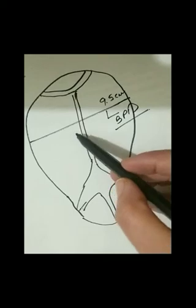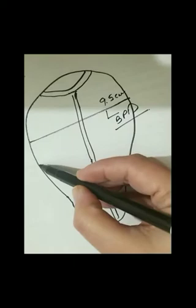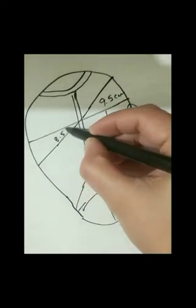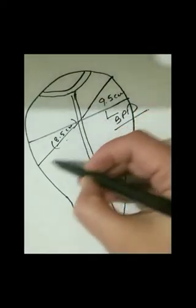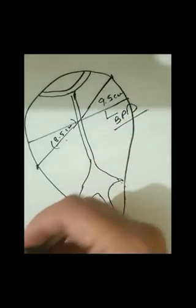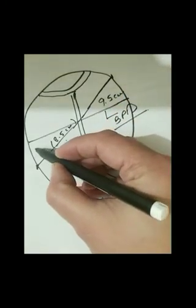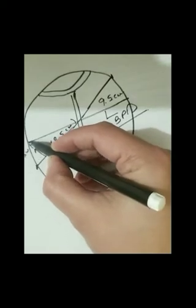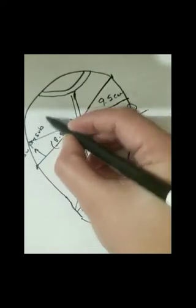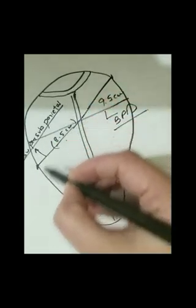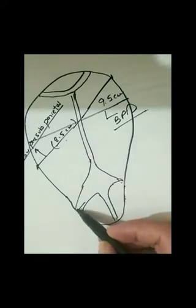Here we have a very important diameter: it is 9.5 centimeters. It is between the two parietal bones, so it is called the BPD or biparietal diameter. We have another diameter which crosses this line going in a different direction — that diameter is about 8.5 centimeters, pointing from one point to another.